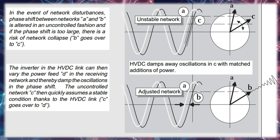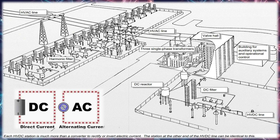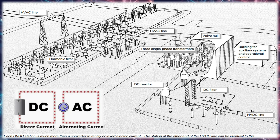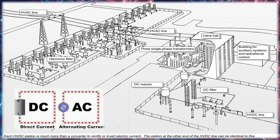In the electrifying clash between high-voltage AC and high-voltage DC transmission systems, both contenders bring their unique strengths to the power grid arena. While HVAC works with alternating currents, HVDC strides steadfastly in a single direction. Remember that these systems aren't rivals — they're complementary partners, each playing a vital role in our electrified world.